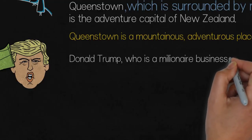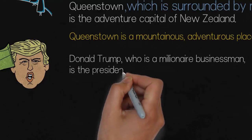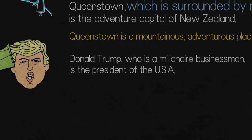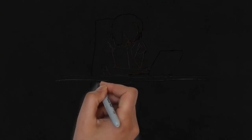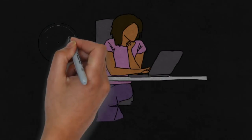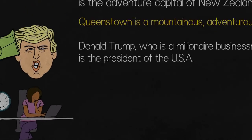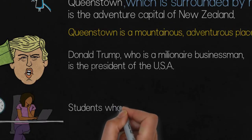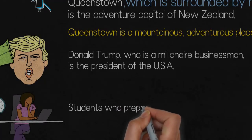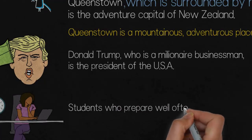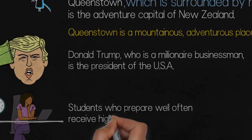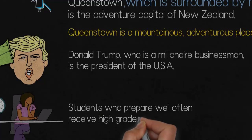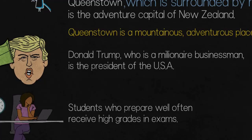So we've added that extra bit in about the businessman and the millionaire. And sometimes we have what's called a defining relative clause, which is a little bit different. So let's look at this girl here. Students who prepare well often receive high grades in exams. That's a good example where we need all of those words, so we put them together.